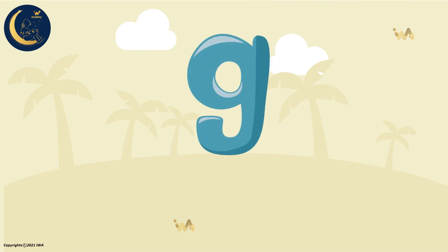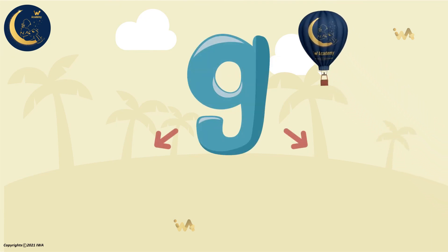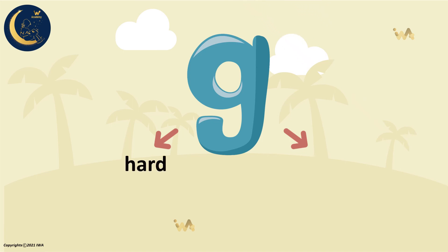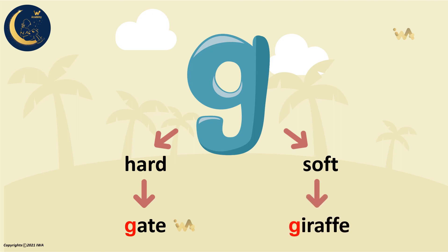So the letter G has two different sounds. The first sound is the hard sound: G, like in the word gate. The second sound is the soft sound: G, like in the word giraffe.